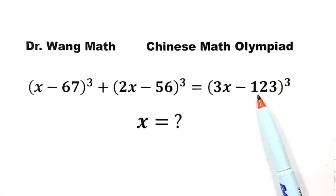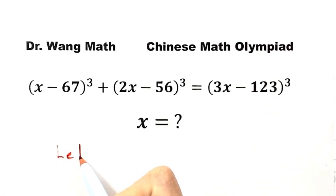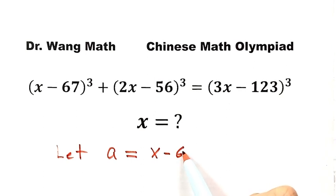The first thing we want to do is make our life easier by introducing some variables. So first, let a equals this part, x minus 67.